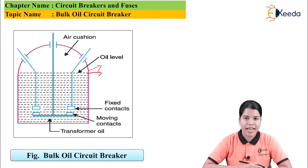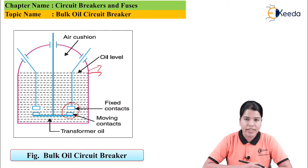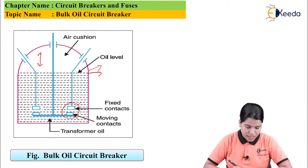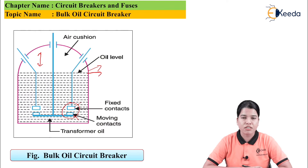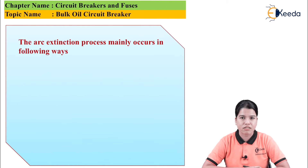This is the dome-shaped tank in which the oil is present. This is the level up to which the oil is filled. These are the two contacts of the circuit breaker — the fixed contact and the moving contact. Here, sufficient space is provided as an air cushion, so that as the contacts are separated and the arc is struck, the hydrogen gas produced due to evaporation of the oil has sufficient room for expansion.